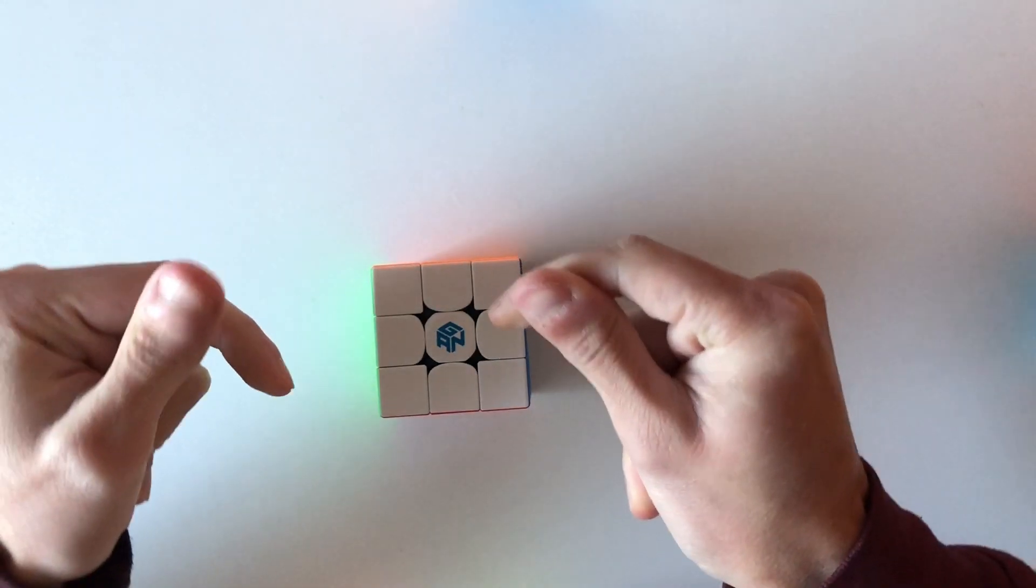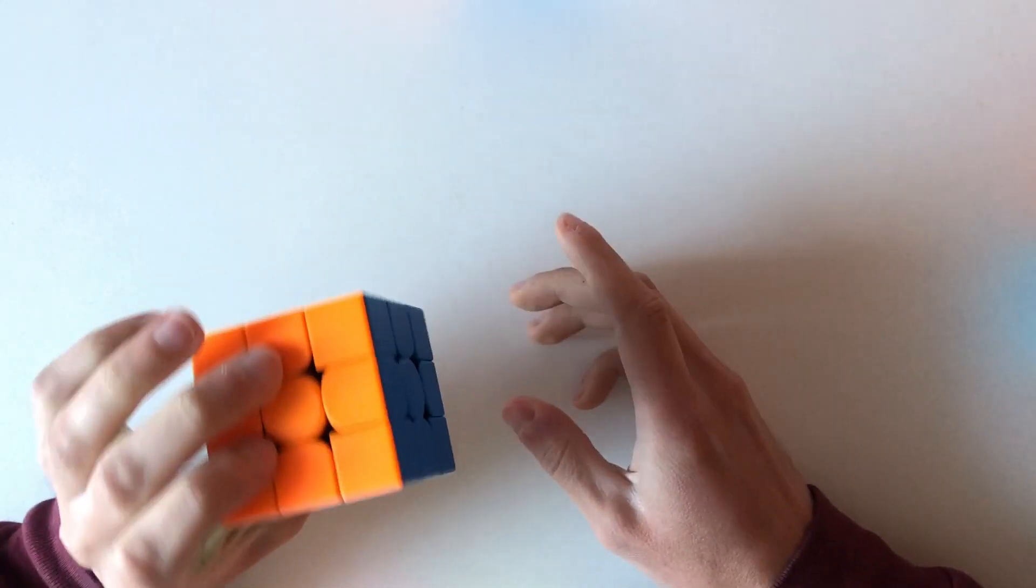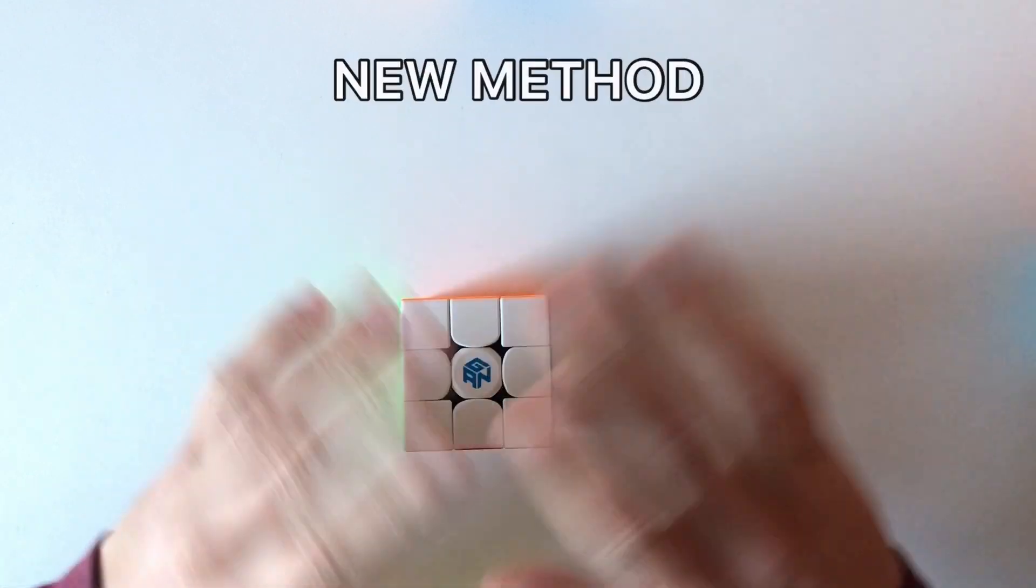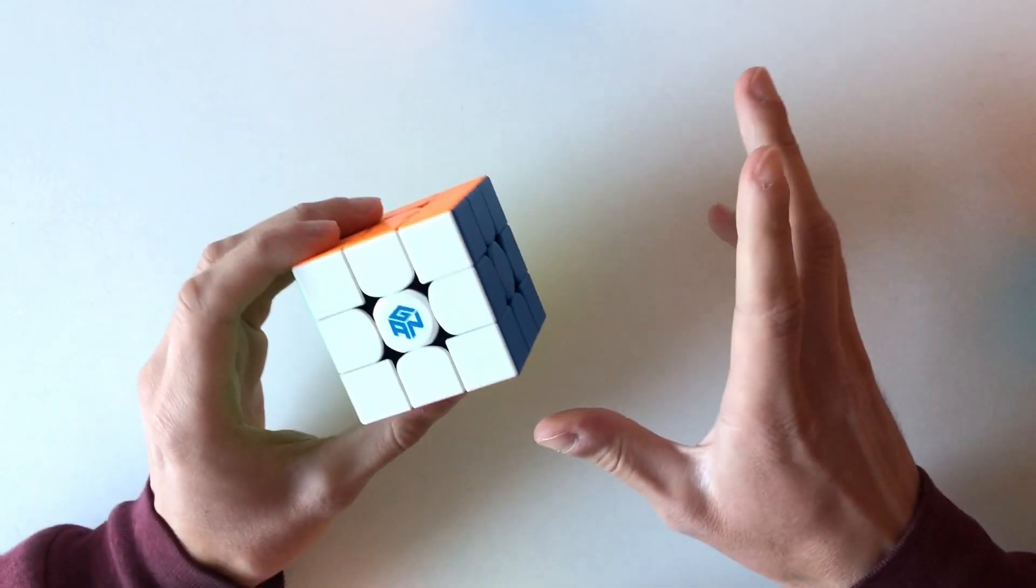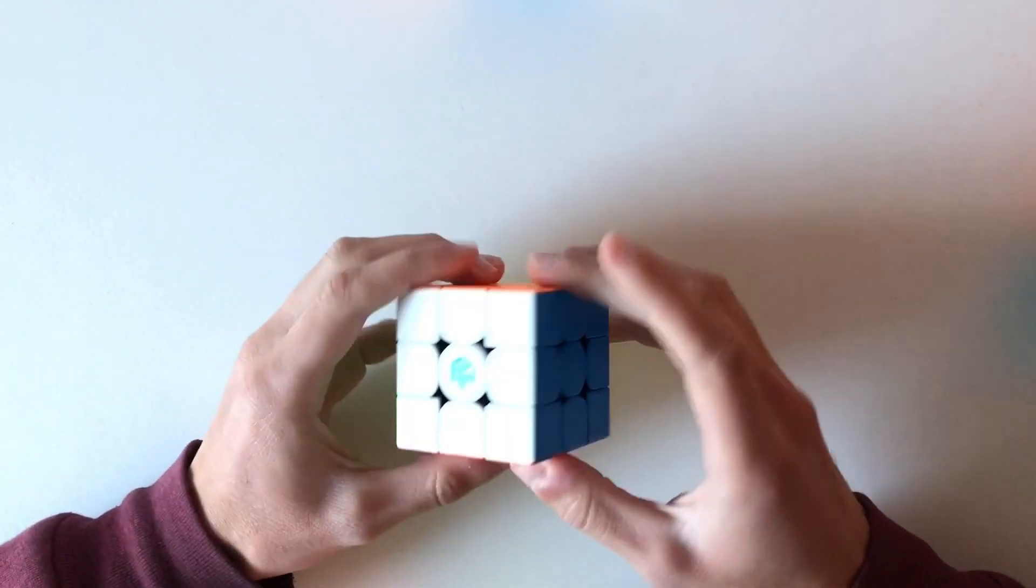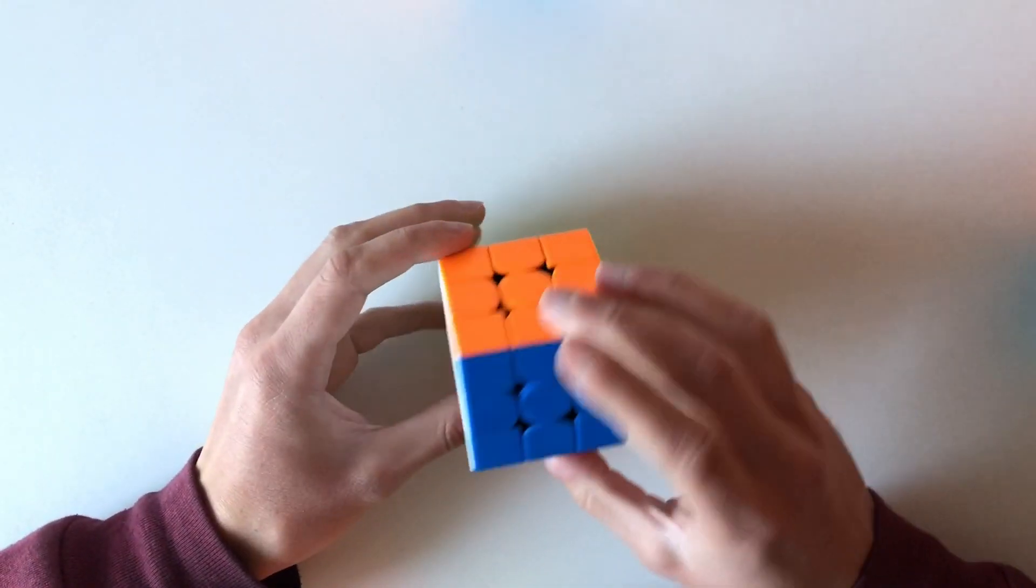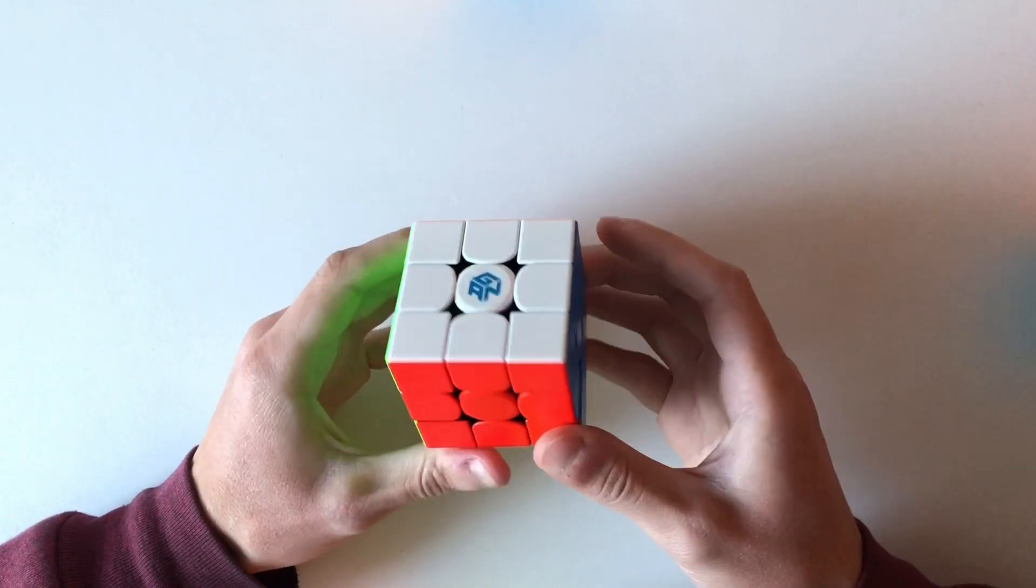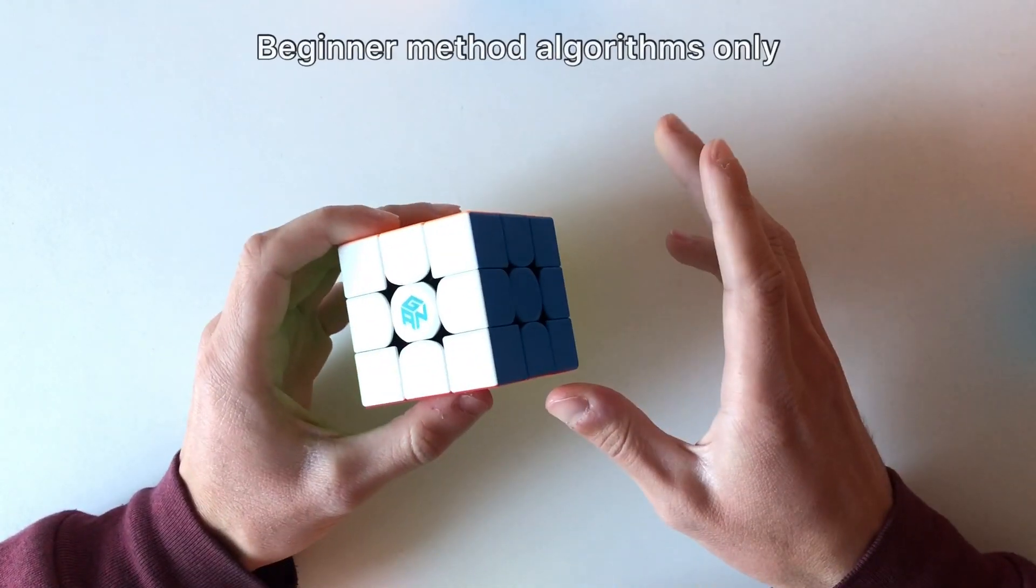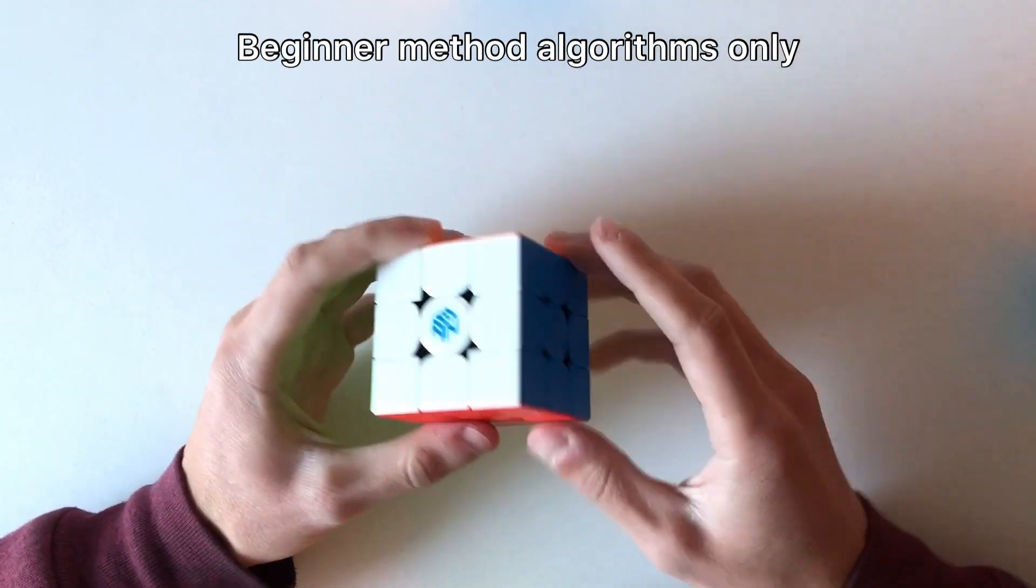Hello guys, Rubik's Snap here. In this video I'll be solving the 3x3 with a new method that I came up with. In one of my previous videos I solved the 3x3 using only OLL and PLL, and it was really fun to try. Now I will try to solve this using only beginner method algorithms.